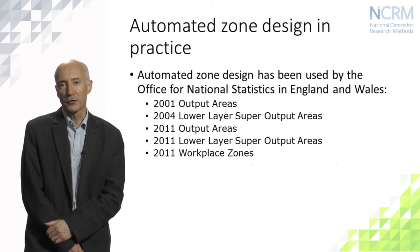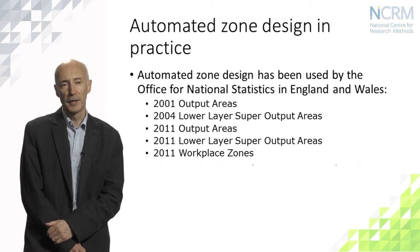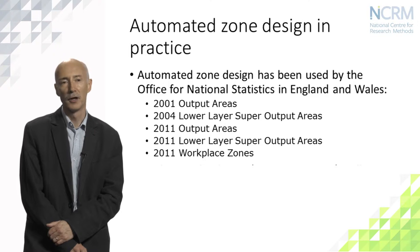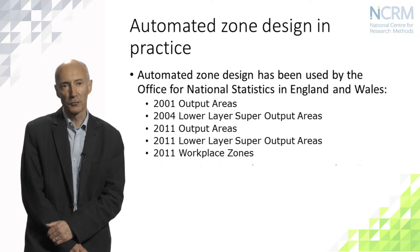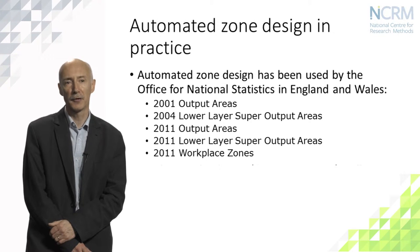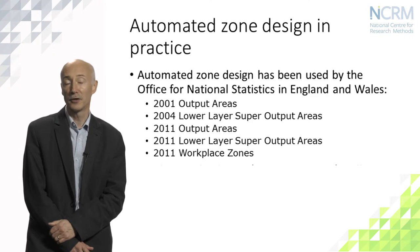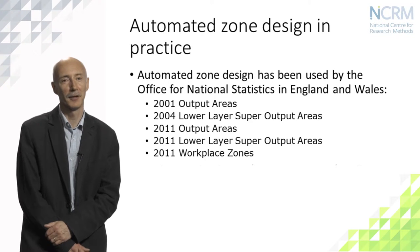Since the census in 2001 in England and Wales, the automated zone design techniques that we've been talking about have been used to underpin the creation of quite a wide range of official statistical areas. This commenced with 2001 census output areas, and then the aggregation of those in 2004 into a set of units called lower layer super output areas, which I'll explain more about in a minute.